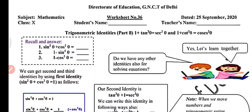Hello everyone, welcome to my YouTube channel NCRT Maths Hub. Today in this video we will do worksheet number 36, class 10, subject mathematics. Today our topic is trigonometric identities part 2.